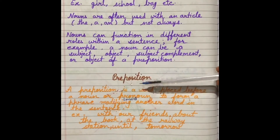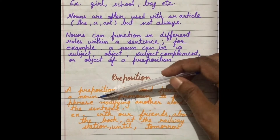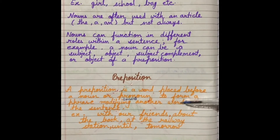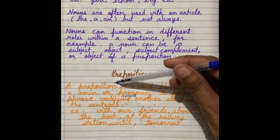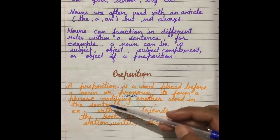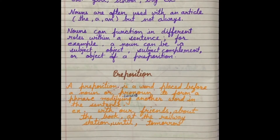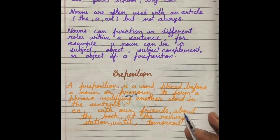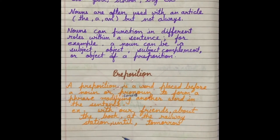Next, preposition. A preposition is a word placed before a noun or pronoun to form a phrase modifying — it means connecting — another word in the sentence. Jo preposition word hai woh always noun or pronoun se pehle place kiya jaata hai, ise ek phrase mein change karne ke liye aur doosre sentence ke saath jodne ke liye. For example: 'with our friends' — here 'with' is the preposition; 'about the book' — here 'about' is the preposition; 'at the railway station' — here 'at' is the preposition; 'until tomorrow' — these are some more prepositions.